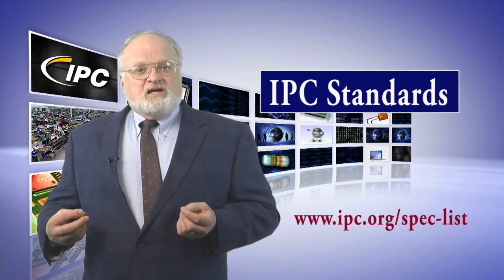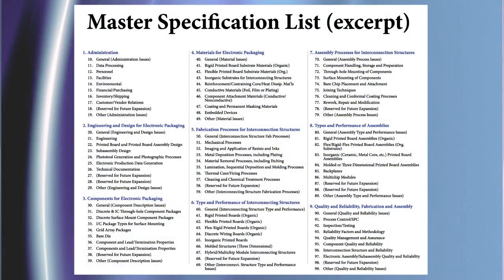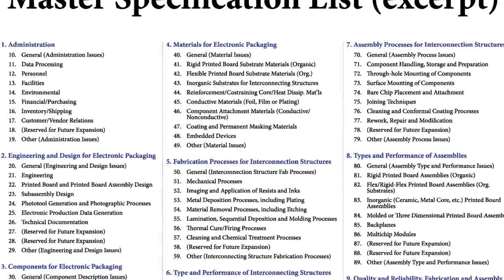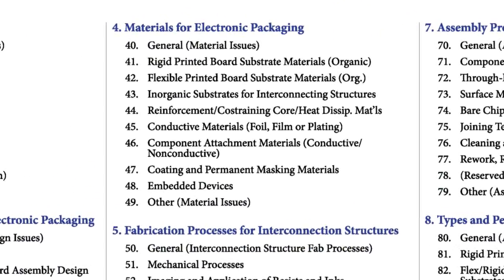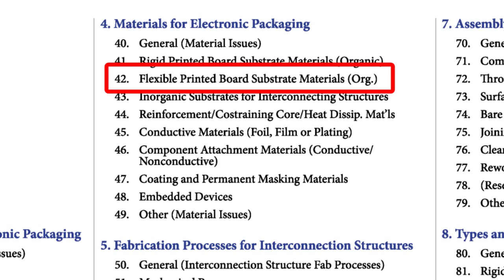An excerpt can be found at www.ipc.org/spec-list. By referencing this document, if you were looking for something that spelled out the requirements for materials — which would be the first digit four — that might be used to make flexible printed circuit boards, that would result in first and second digits of 42. So you'd start by looking at documents numbered IPC-42XX.